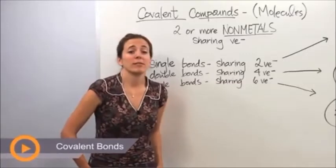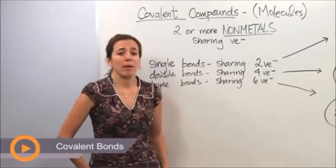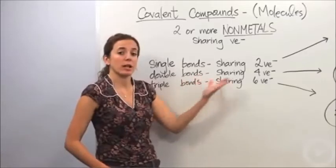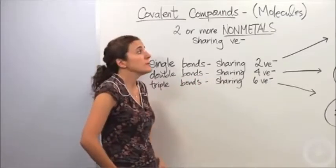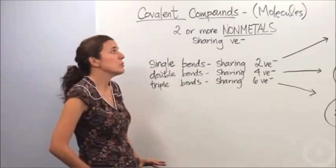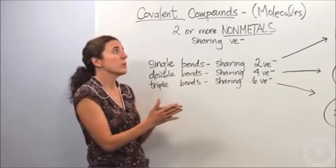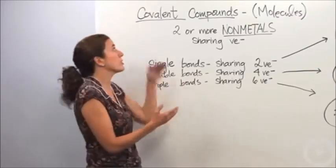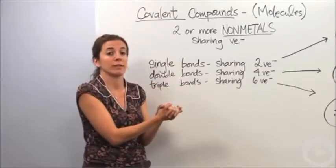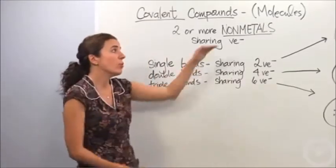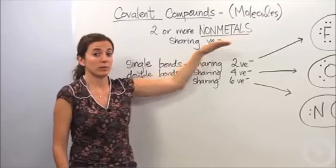We're going to talk about covalent compounds. Another word for covalent compounds is molecules. Anytime two or more non-metals come together, they share their valence electrons, and that creates covalent compounds. Notice covalent—sharing their valence electrons with each other. This only occurs in non-metals.